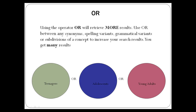If you're looking for literature that discusses persons aged 13 to 17, what terms do we use to describe them? We could search for teenagers OR adolescents OR young adults. By using the OR operator between synonyms, we are broadening our search to include literature that uses any of these terms.